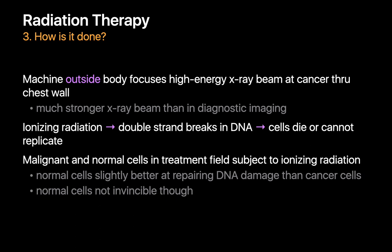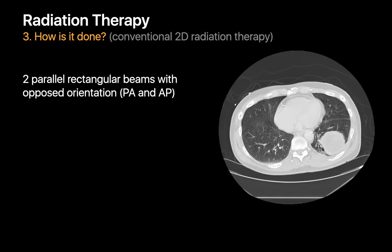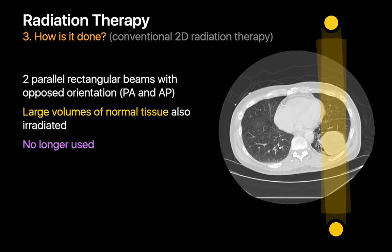Some amount of collateral damage may occur since it's difficult to avoid irradiating a bit of normal surrounding lung tissue when trying to treat the entire lung cancer. Although normal lung cells are a little better at repairing DNA damage than cancer cells, they're not invincible. Traditionally, radiation therapy used two parallel rectangular high-energy x-ray beams directed at the lung cancer in opposed orientation — posteroanteriorly and anteroposteriorly. However, this method of conventional 2D radiation therapy delivers a large amount of ionizing radiation to large regions of normal lung tissue and is therefore no longer used.